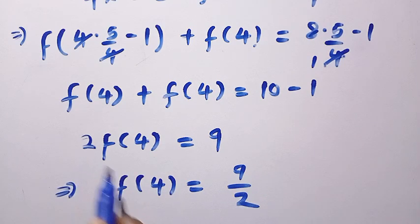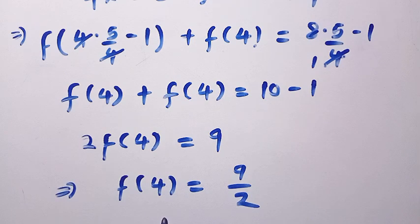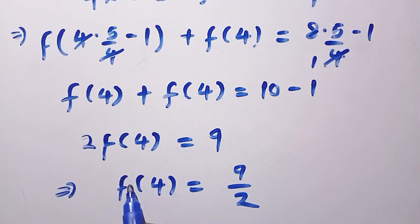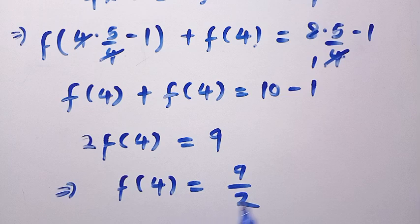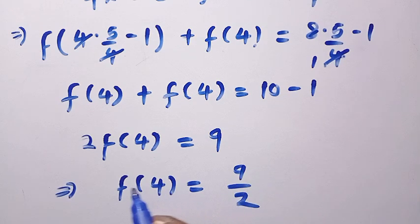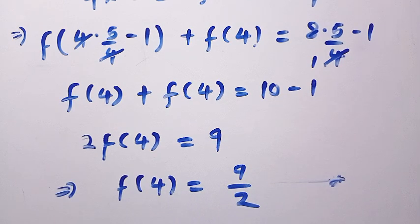When we divide both sides by 2, we get f of 4 equals 9 divided by 2. So the value of f of 4 has been found to be 9 over 2. And this same f of 4 will be used in the next part of the method.